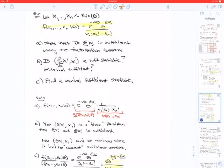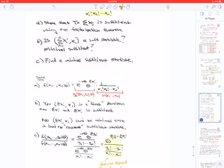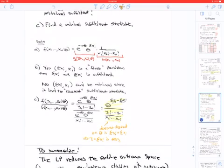Here's another example: X1 to Xn Poisson. Let's show that T is sufficient using the factorization theorem. Is the sum of Xi, X1, a sufficient statistic? Is it minimally sufficient? Find a minimally sufficient statistic. So we start off with factorizing, which would show that the sum of the Xi is sufficient.